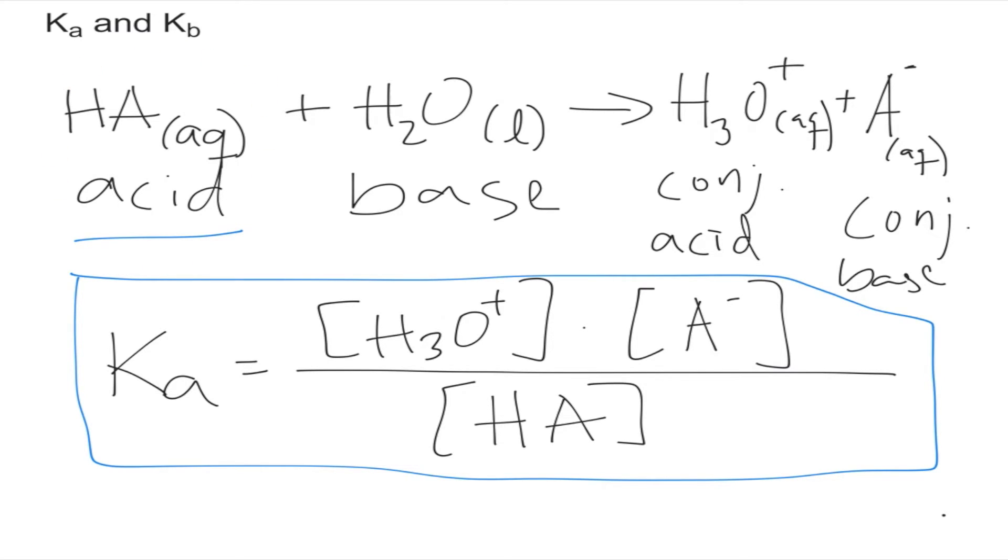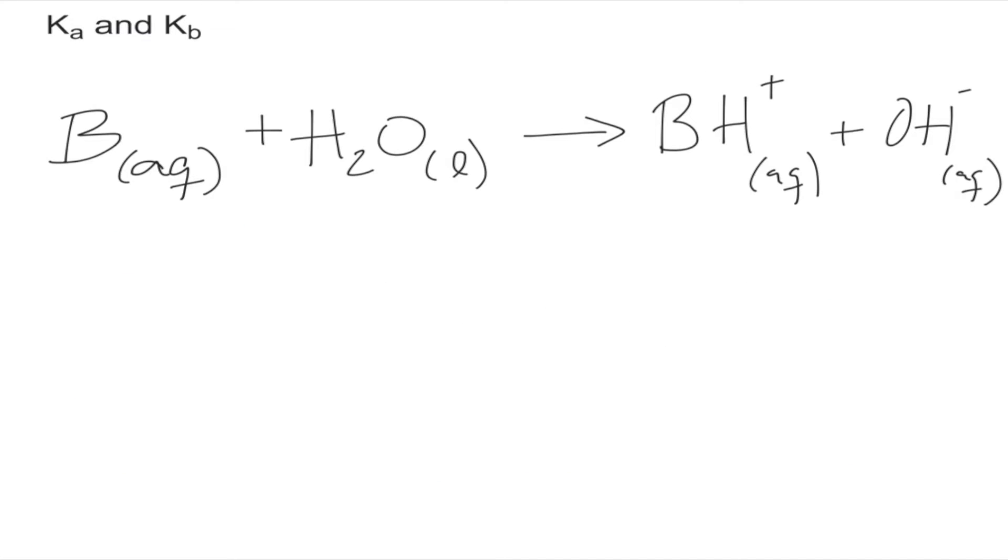Now let's look at the Kb. The process is the same. Again you can label this. B represents the base. In this particular case, water acts as an acid as it will donate this proton to the base, forming BH plus as well as the hydroxide ion OH minus.